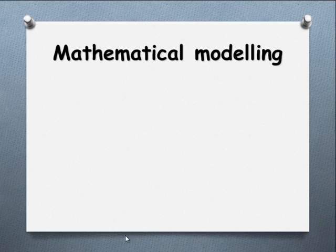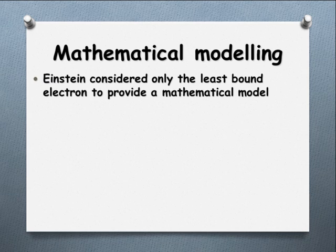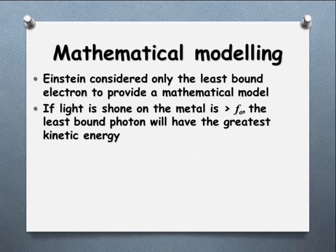Einstein, in his mathematical modeling, actually just considered the least bound electron. It was a lot easier to just work with that one electron. So if the light shone on the metal was greater than F0, we have the greatest amount of kinetic energy on that least bound electron.